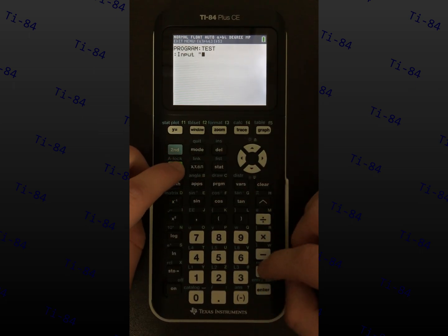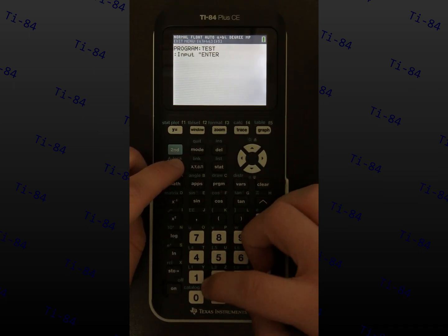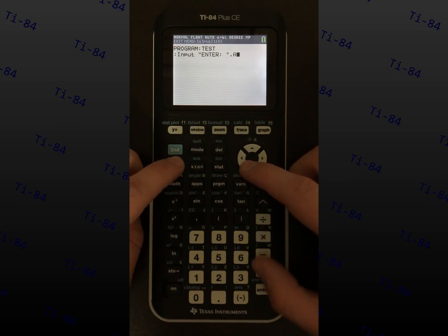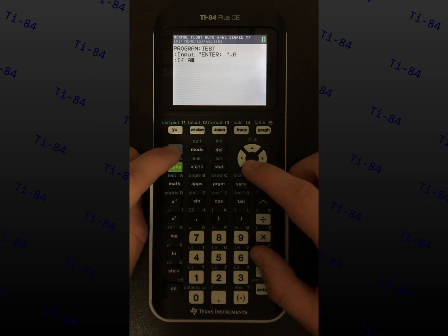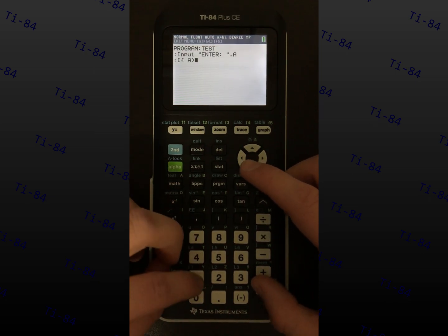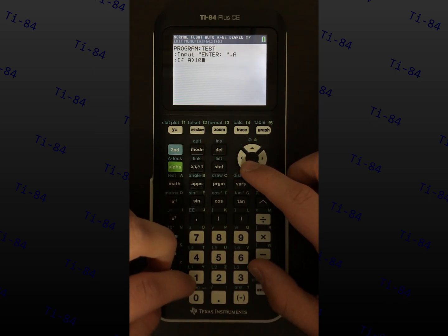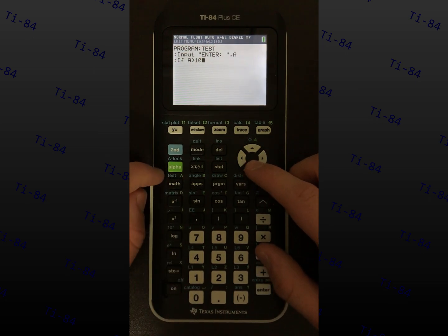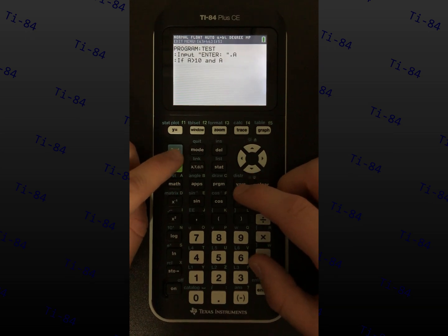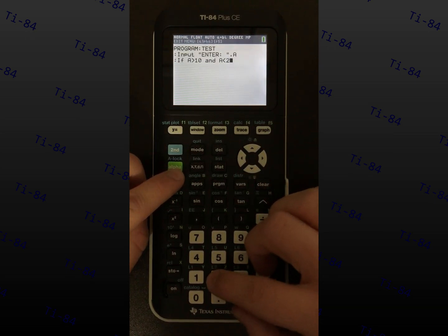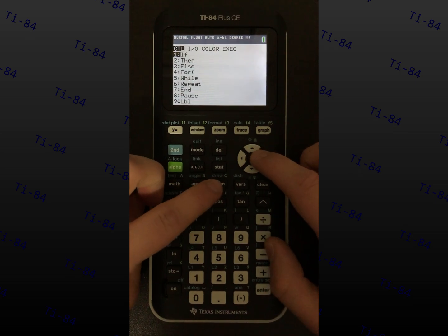For checking if an input is greater than 10 but less than 20, create an input, insert if, then type variable is greater than 10 and variable is less than 20. On the next line, type then, this closes the logic statement.